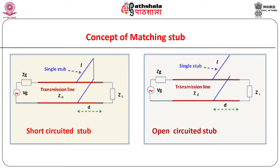The stub may be short circuited or open circuited at its open end. However, short circuited stub is preferred because practically it is easier to achieve a reliable perfect short circuit rather than a perfect open circuit. Thus, a short circuited stub of proper length L connected at proper distance D serves the purpose of a perfect match.